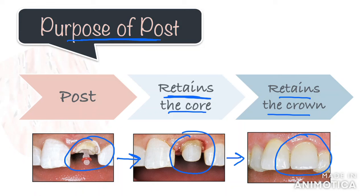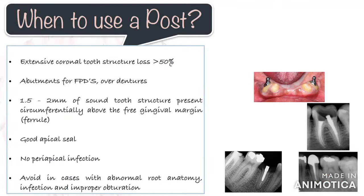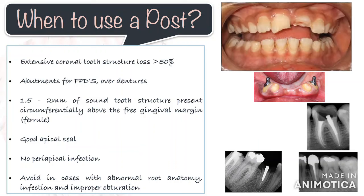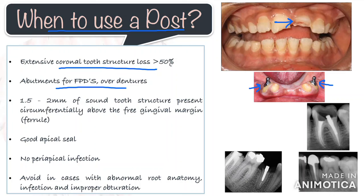Basically, it creates a foundation on which you can build your core and the core retains the crown. So if you see a tooth with barely any crown structure, give this option a thought before extracting your tooth. Post and core is mainly used in teeth with extensive coronal tooth structure loss, that is when more than half of your crown portion is missing. A very good case for post and core is tooth-supported overdentures, where attachments cemented into the post space help improve the retention of the denture.